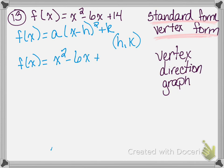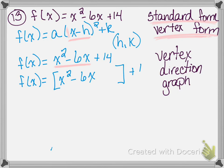I've got x squared minus 6x plus 14. We look at x squared minus 6x and determine if there's an integer to pull out of both. We need a 1 in front of that x squared when putting it in vertex form. So we have f of x equals, and I keep x squared minus 6x inside brackets, with plus 14 on the outside. Now I take half of negative 6, which is negative 3, and negative 3 squared is 9.